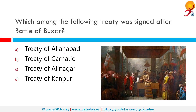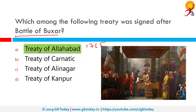Which among the following treaties was signed after the Battle of Buxar? The important outcome was the Treaty of Allahabad, signed on 16th August 1765, between Lord Clive and Mughal Emperor Shah Alam II. So the Battle of Buxar led to the signing of the Treaty of Allahabad in 1765.